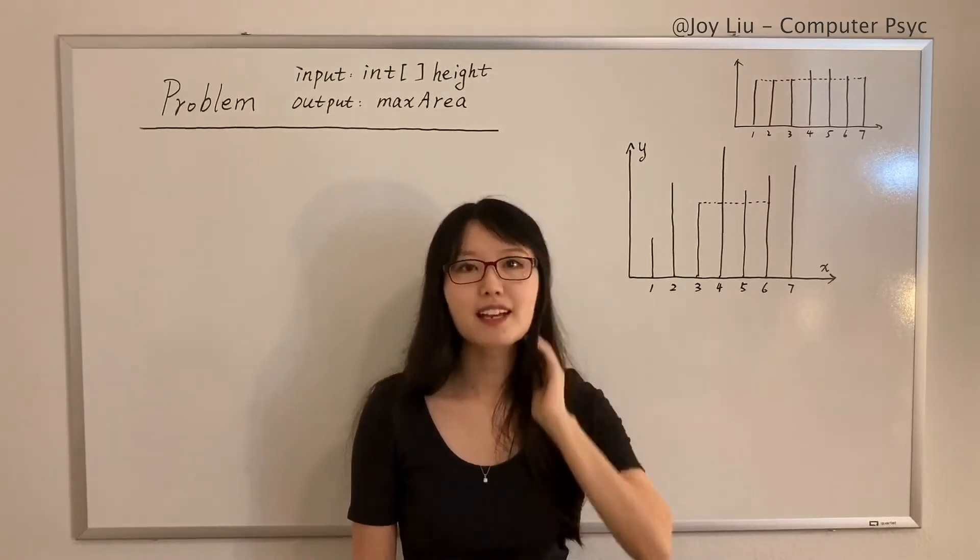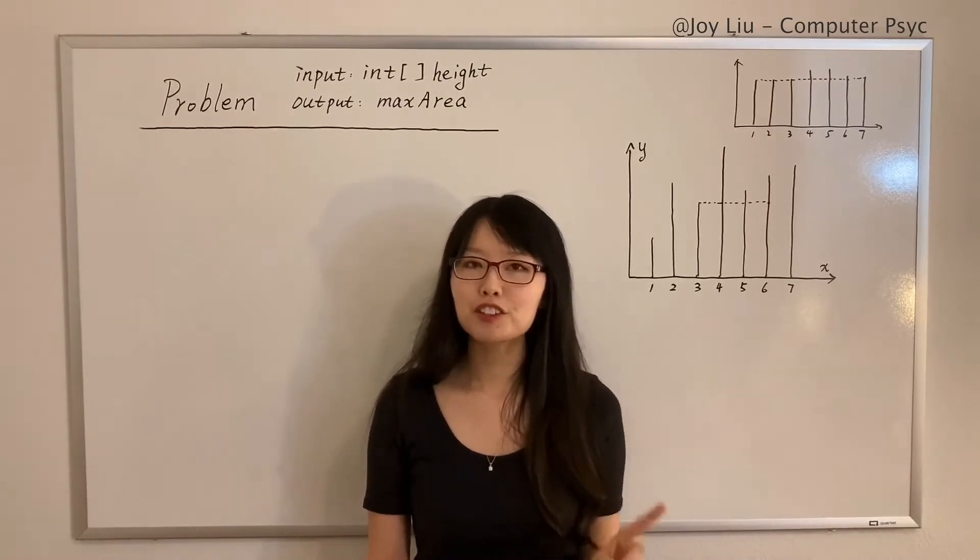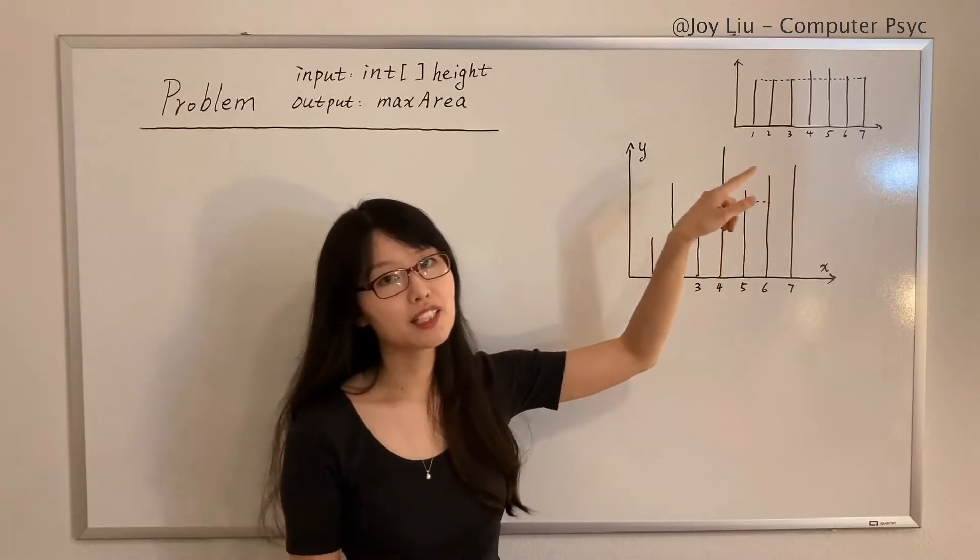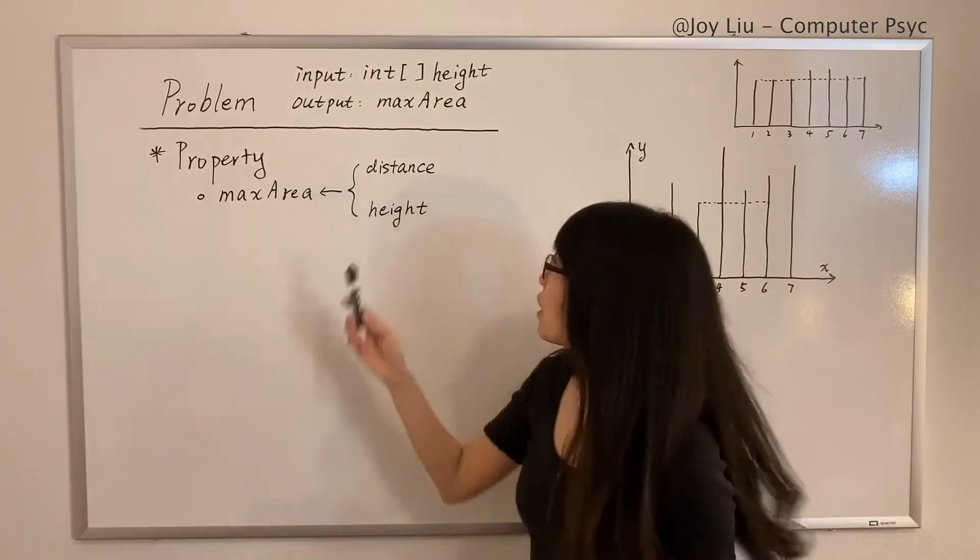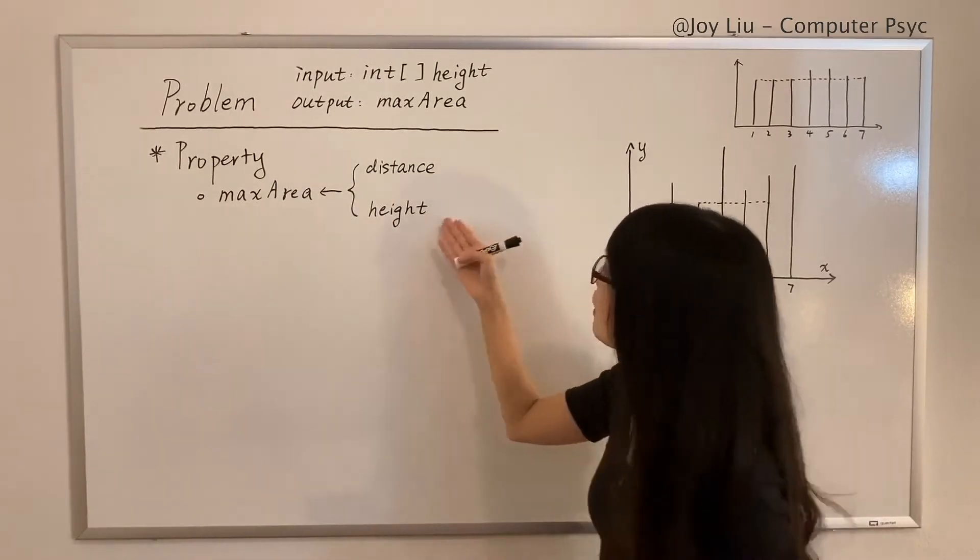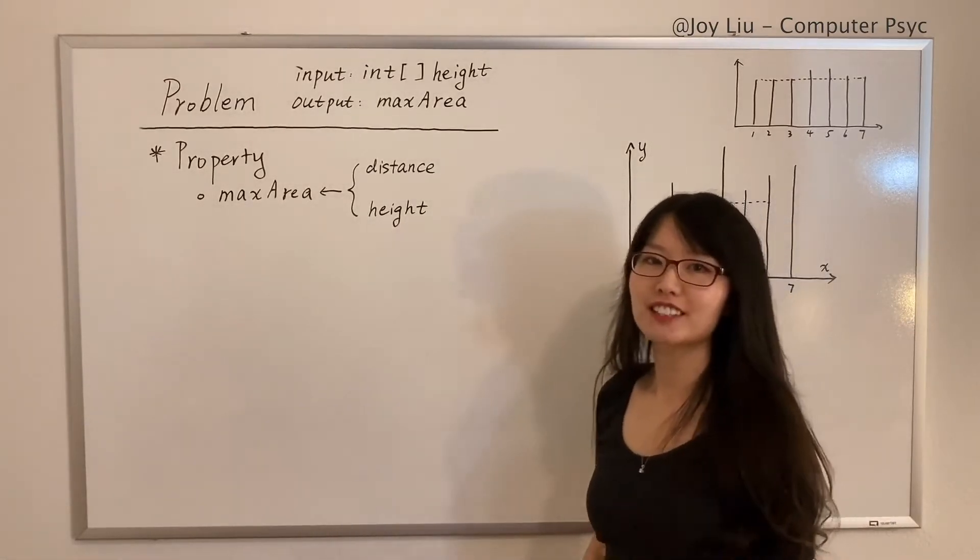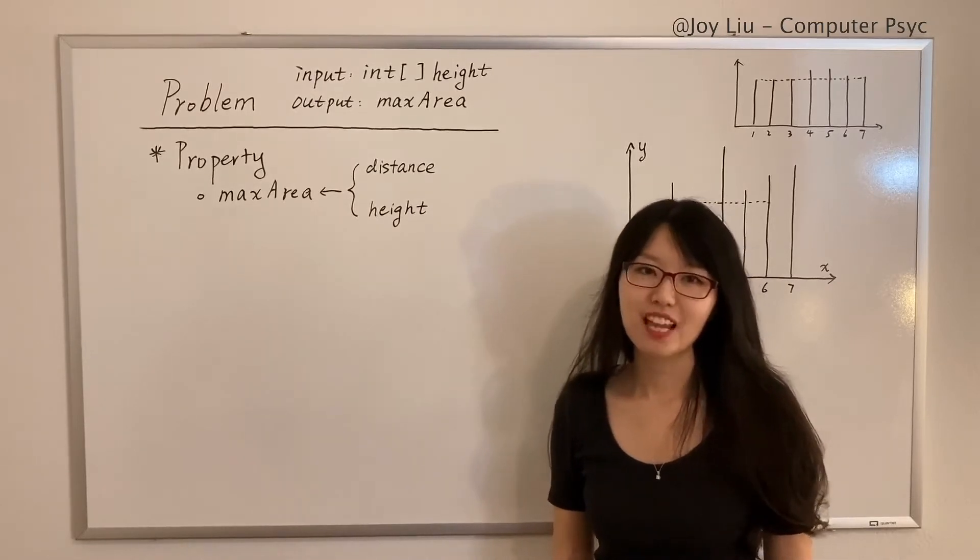With this example, we know that the max area actually relies on both things: first, the distance between lines, and second, the height of the lines. Let me just write it down. So if a container meets only one requirement here—say it's the tallest or the widest—it doesn't ensure it's the largest. It doesn't mean anything. So there's no shortcut.